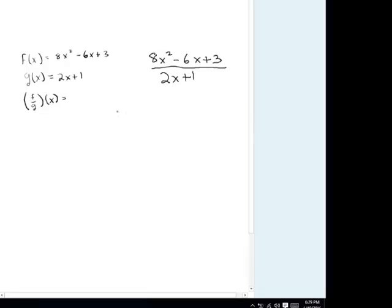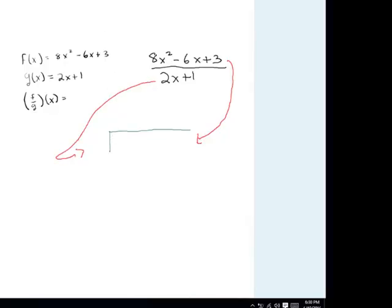Depending on your teacher, we're going to make a little dividing sign, and we are going to make sure this top part goes right here and this bottom part goes right here. So we're going to throw that in as 8x squared minus 6x plus 3 divided by 2x plus 1.